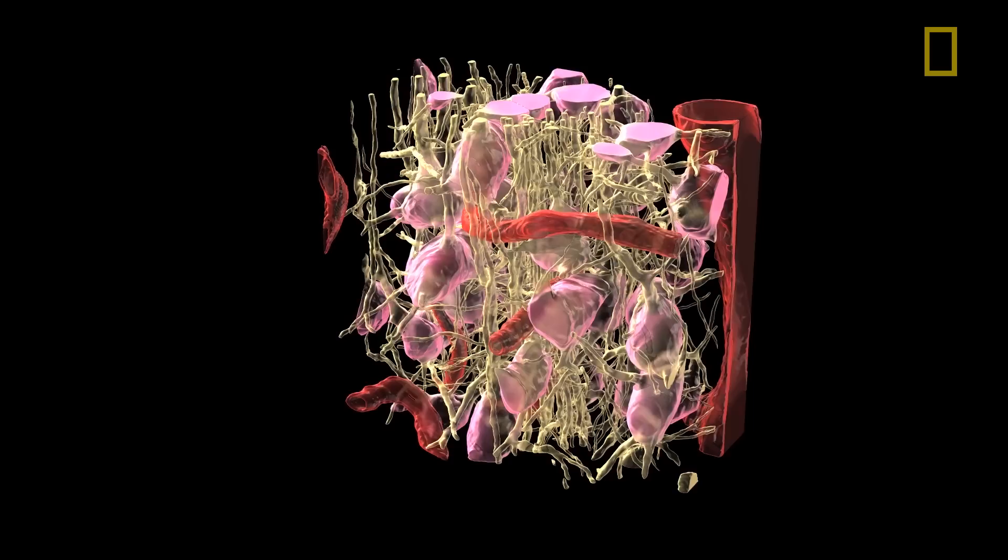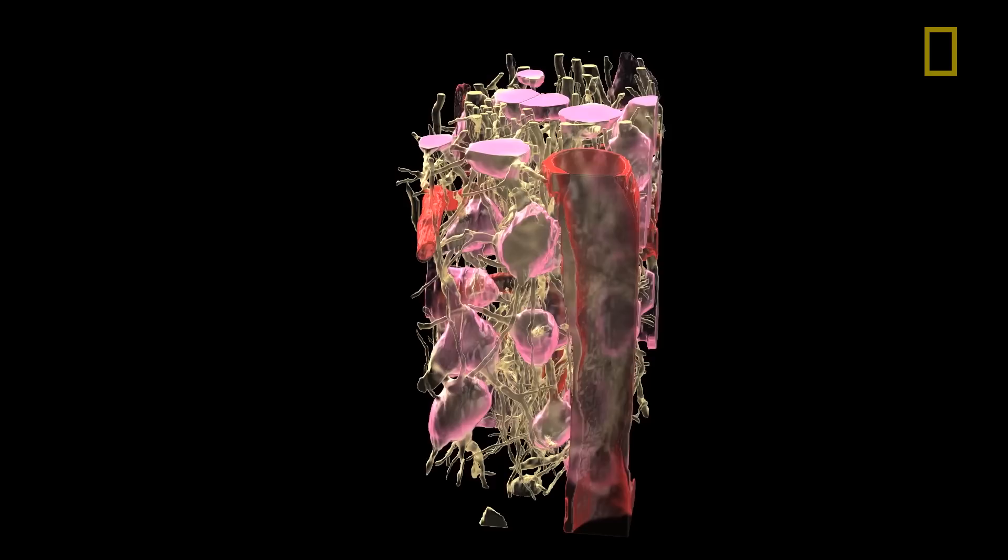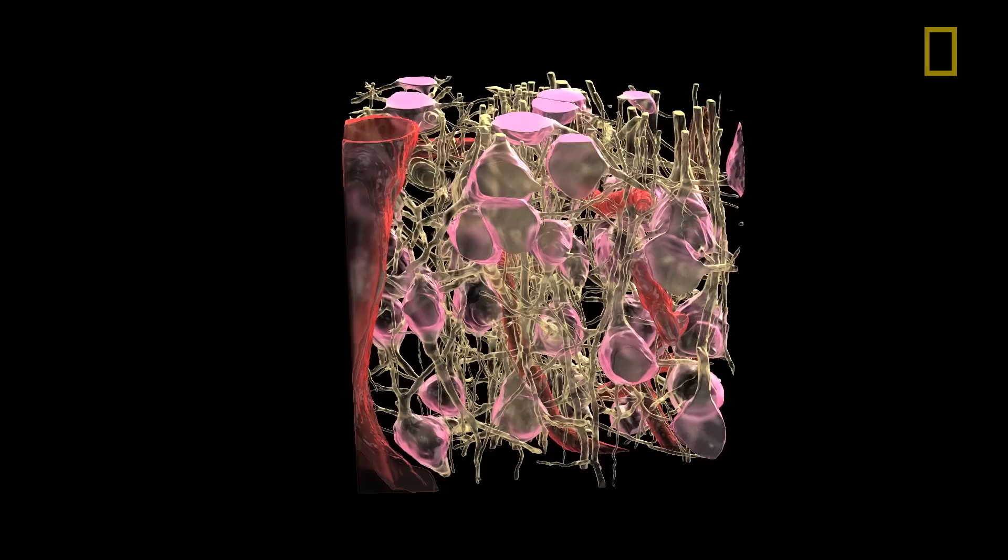We're now looking at a slab that's about a tenth of a millimeter in height of a small piece of brain where some of those nerve cells, they're now all kind of pink in color, are interposed with blood vessels.